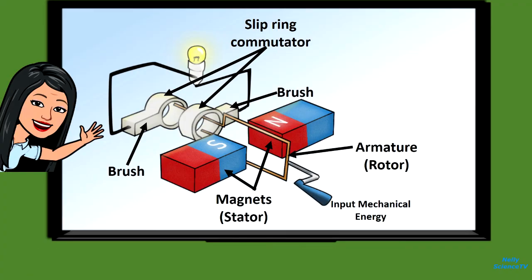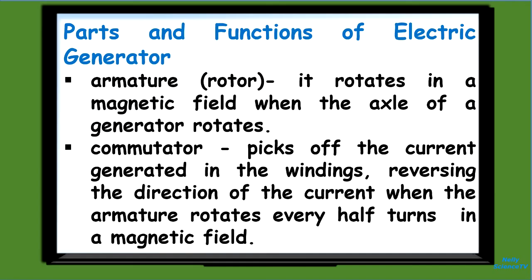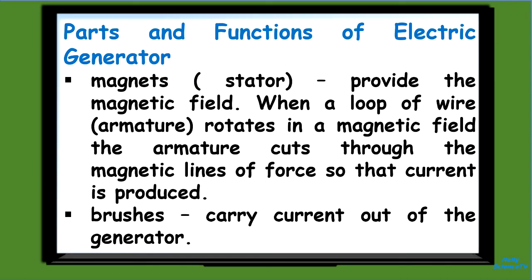Let's summarize the parts and the function of each part of a generator. Copy them on your notebook. First, the armature — also called the rotor — because it rotates in a magnetic field when the axle of the generator rotates. Second, the commutator — it picks off the current generated in the windings, reversing the direction of the current when the armature rotates every half turn in a magnetic field. Third, the magnet, or stator — it provides the magnetic field. When the armature rotates in a magnetic field, it cuts through the magnetic lines of force so that current is produced. Finally, the brushes — they carry current out of the generator.